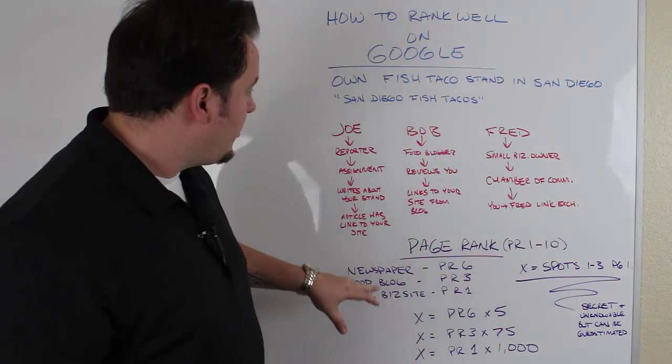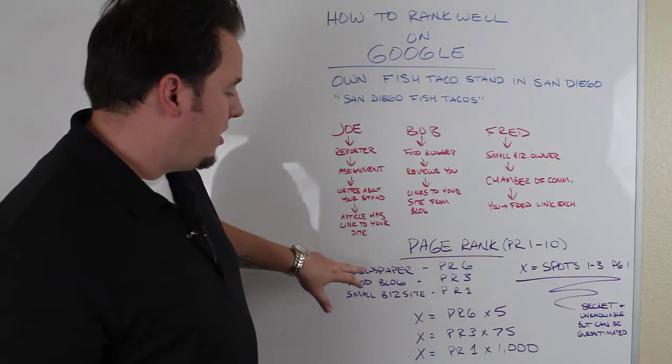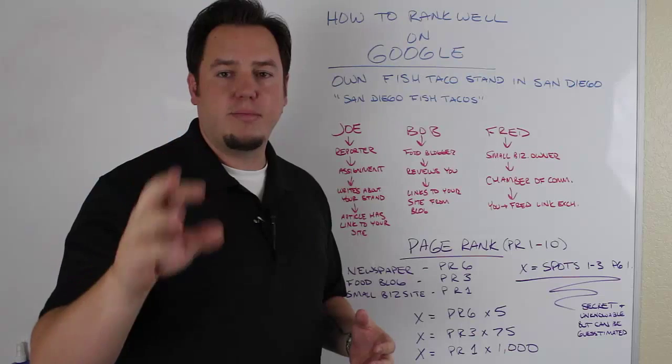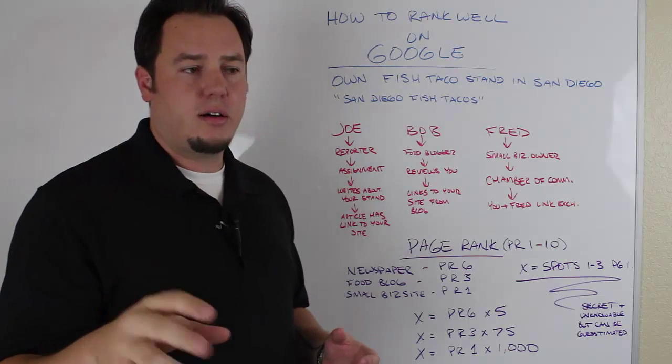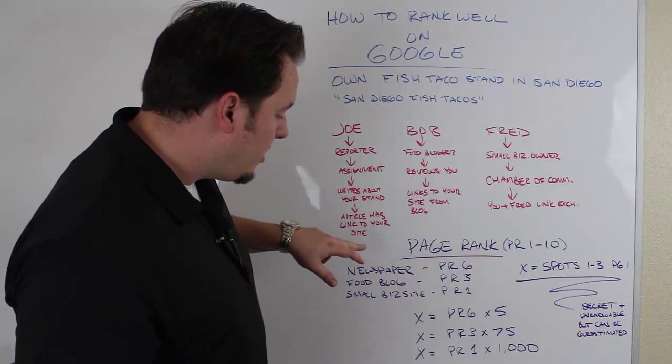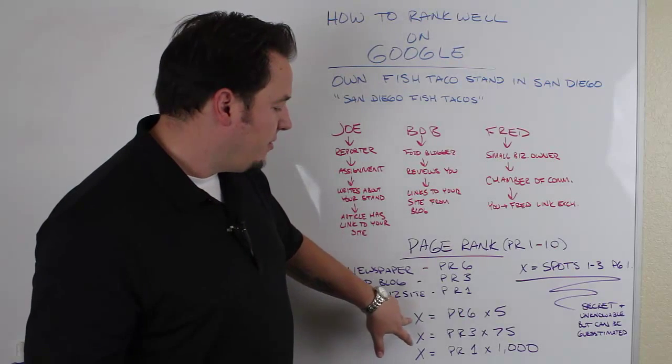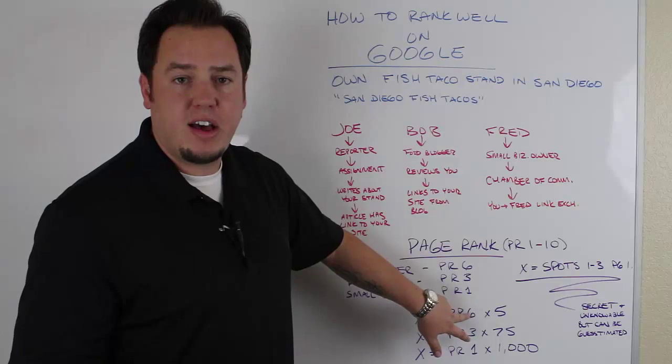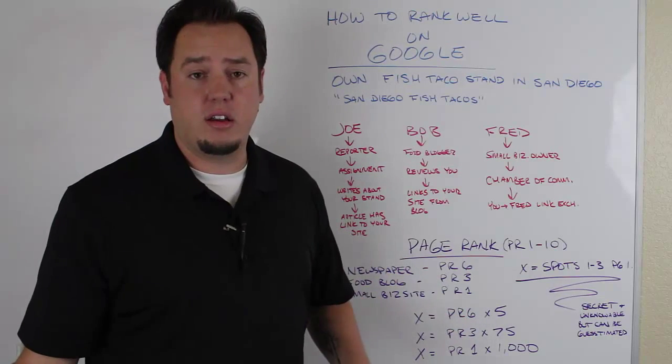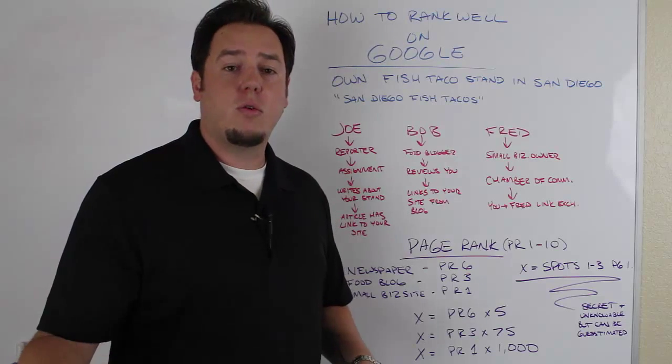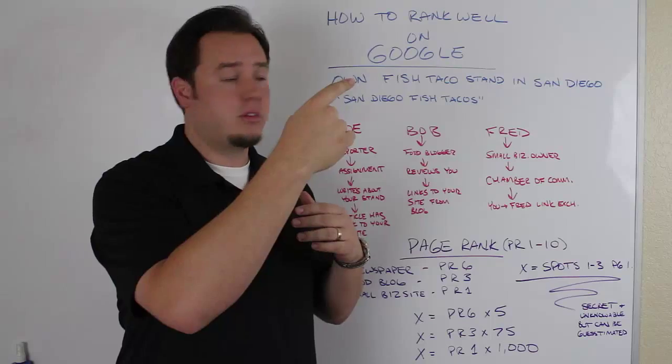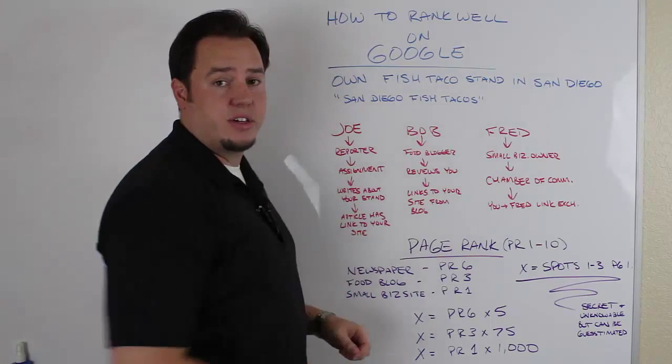So in order to rank well, and again, this is kind of, I don't know, leave me a comment or ask some questions if you need me to expand upon this at all. But basically, it might take you five links from a PR6 website or PR6 websites, so you might need five reviews in newspapers in order to be ranked in the top three positions on that first page of Google for the keyword San Diego Fish Tacos.